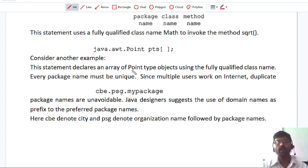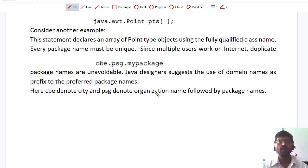To overcome such problems, Java developers already given some solution. They are using some domain name system. Whenever you are mentioning or creating some packages, better to give some domain names. Here, this is one example, how I can access my package which is created by me in the internet. Here, CBE and PSG is a domain name given for my package here.